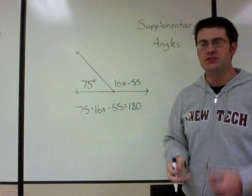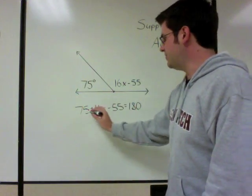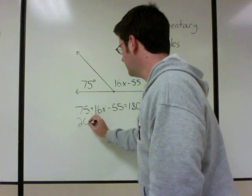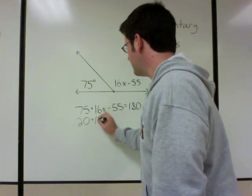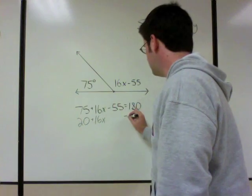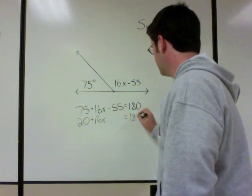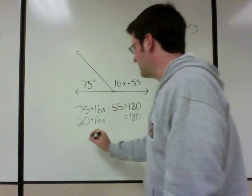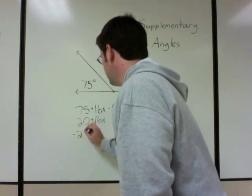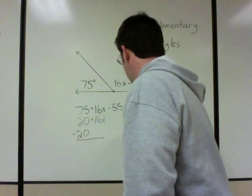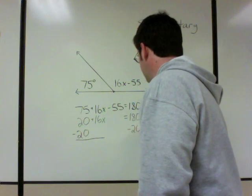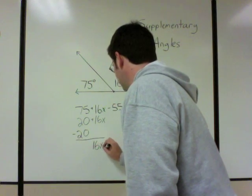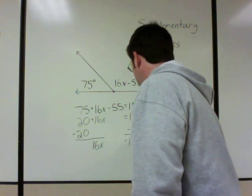Combine like terms: 75 minus 55 gives us 20, so 20 plus 16x equals 180. Subtract 20 from both sides: 16x equals 160.